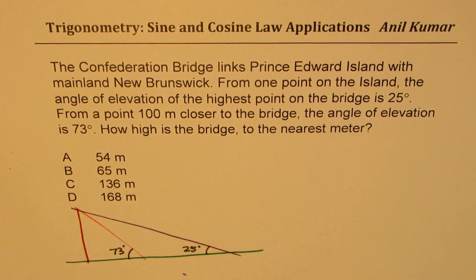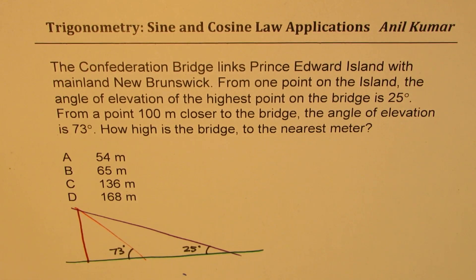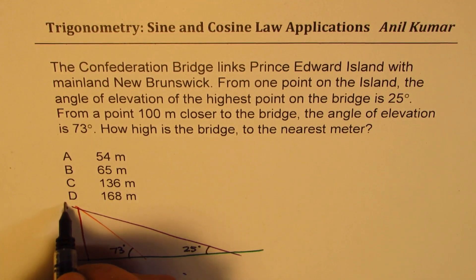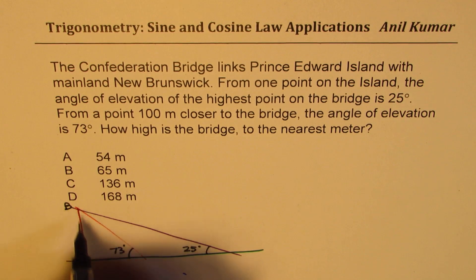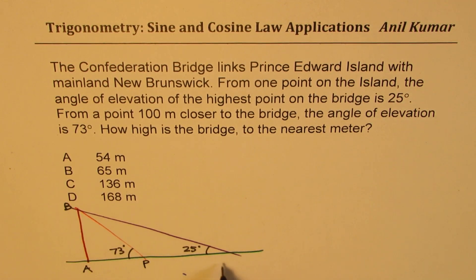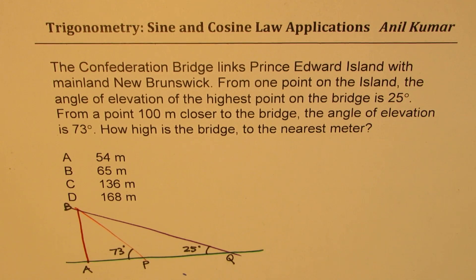Now these calculations are very approximate — it's just a mathematical problem which gives you an approximate idea of the bridge, but it's no way exact. So let's call this point as A to B. We want to find this height, and let's call these points as B and Q.